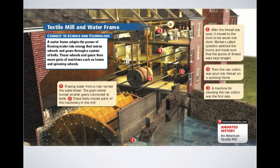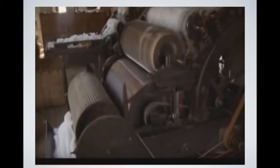Before getting to the video, here's what a textile mill would look like using the water frame. You had a water wheel that would spin gears, and those gears would be connected to the water frame machines that would spin cotton thread onto a spinning frame. This video will show it probably a little bit better than I can explain it.